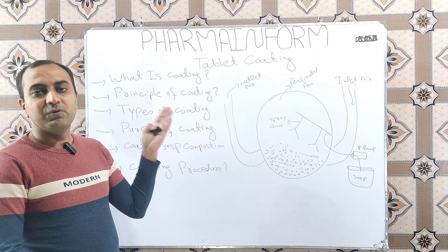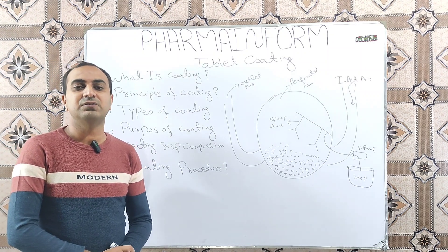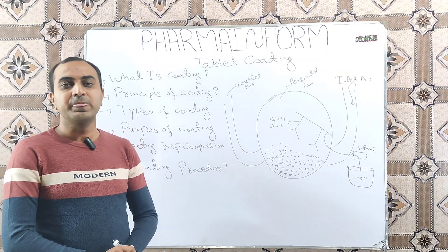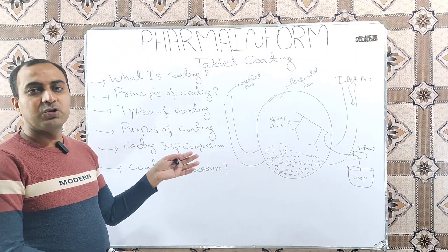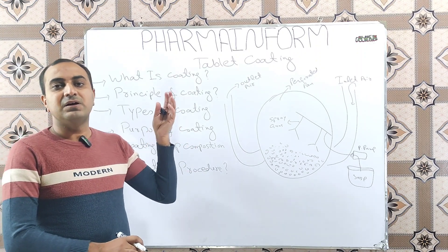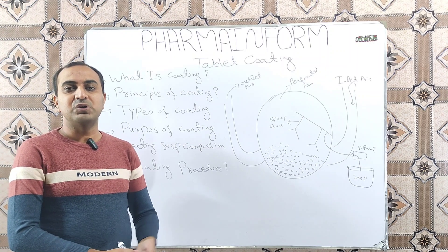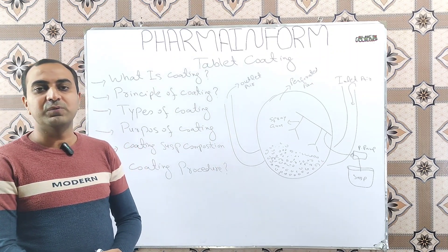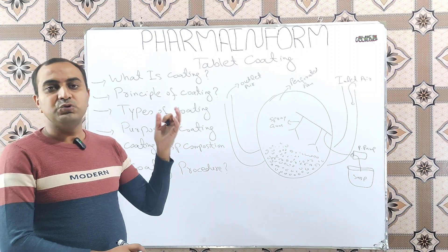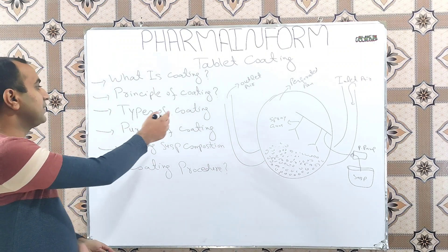The third type is sugar coating — a simple coating process where we apply a sugar solution over the tablet surface. In film coating we use different types of polymers, but in sugar coating we apply a solution of sugar over the tablet surface. A fourth type, drug coating, also exists — a link to that video is given in the description.